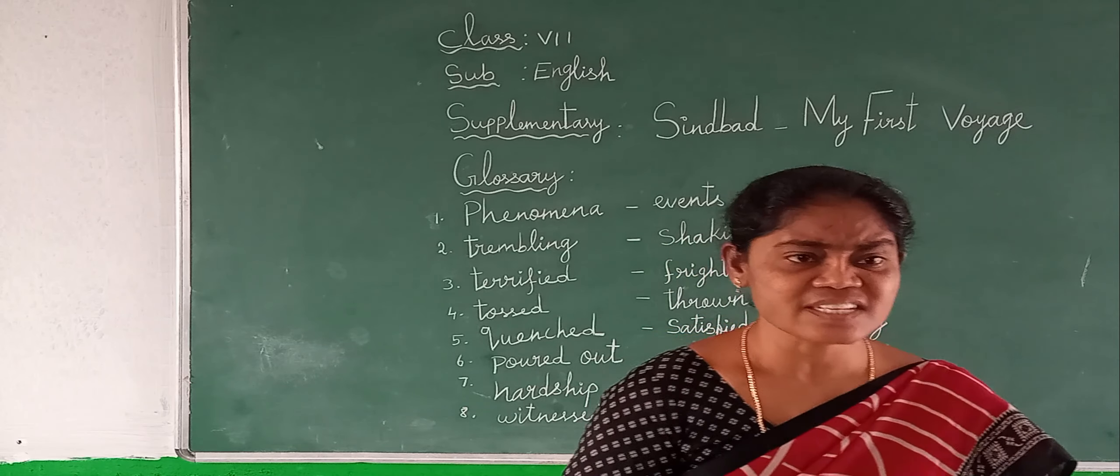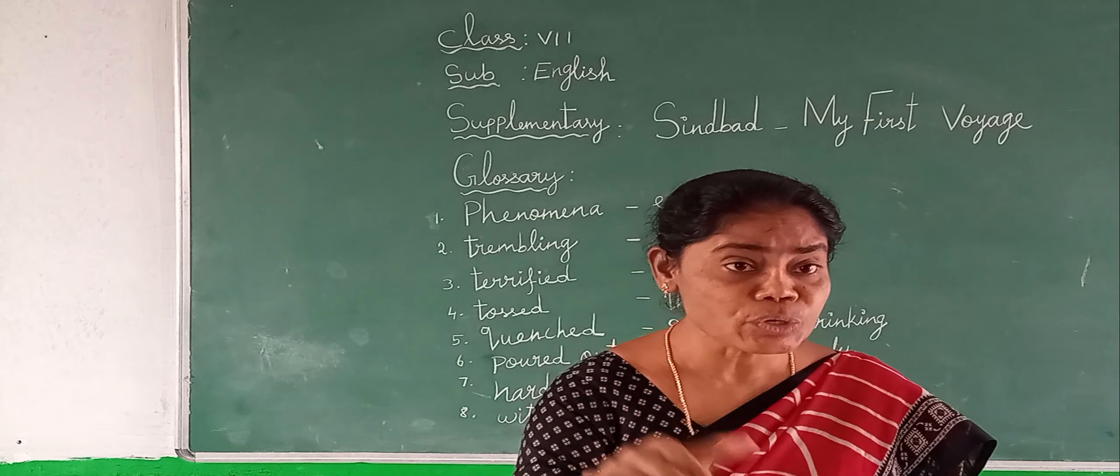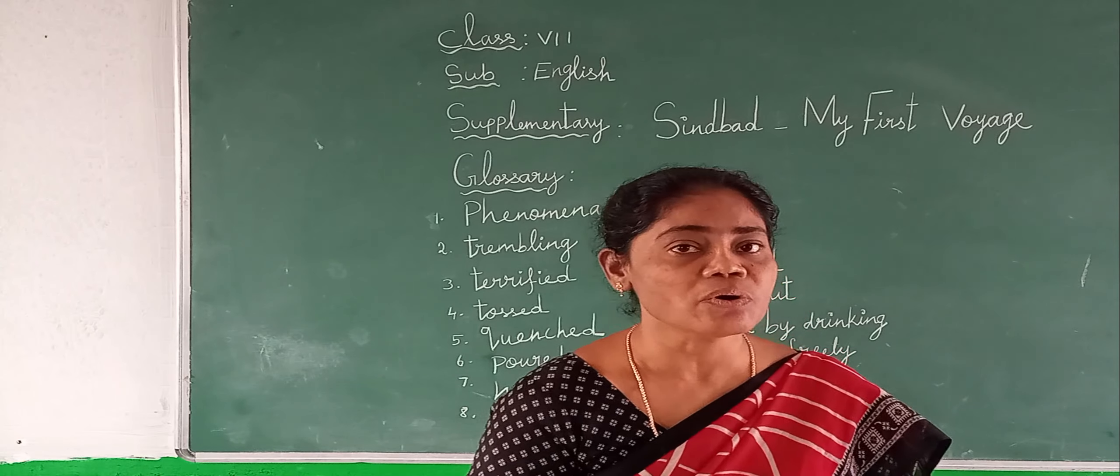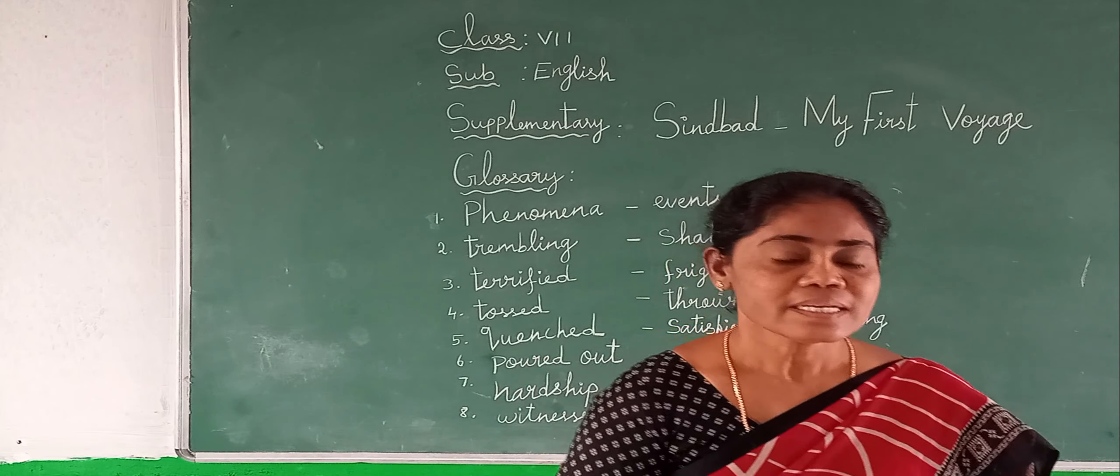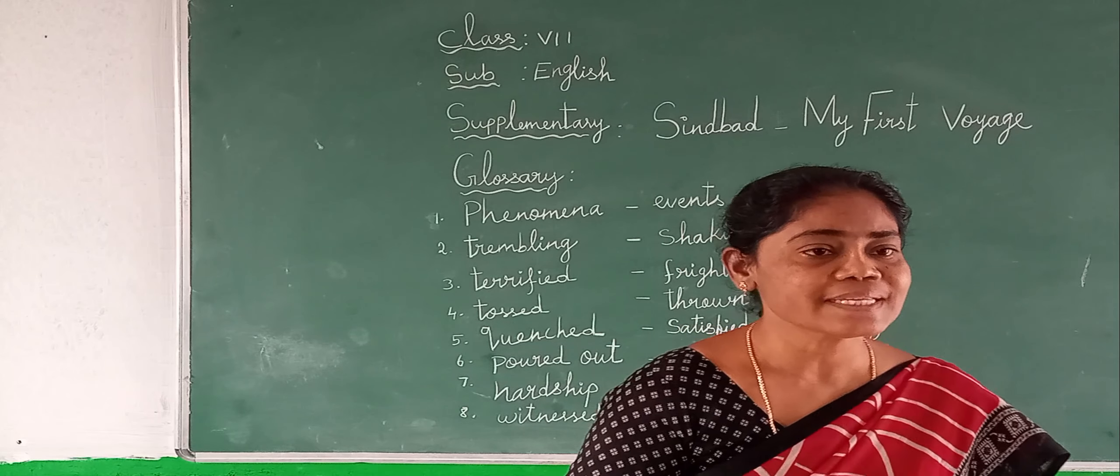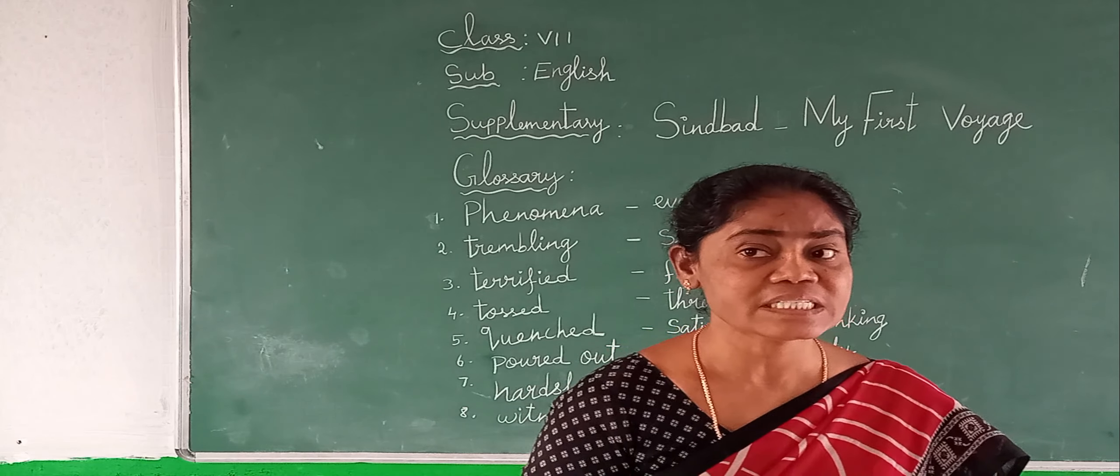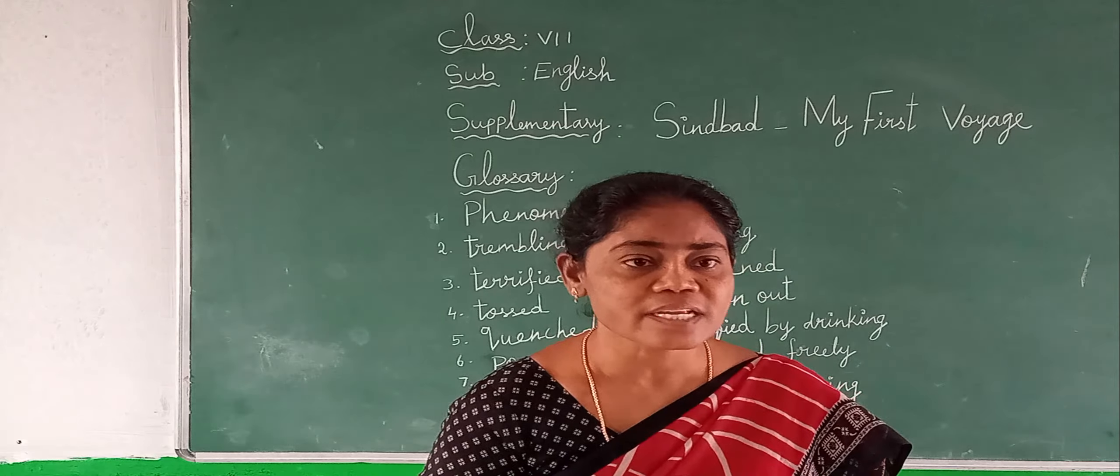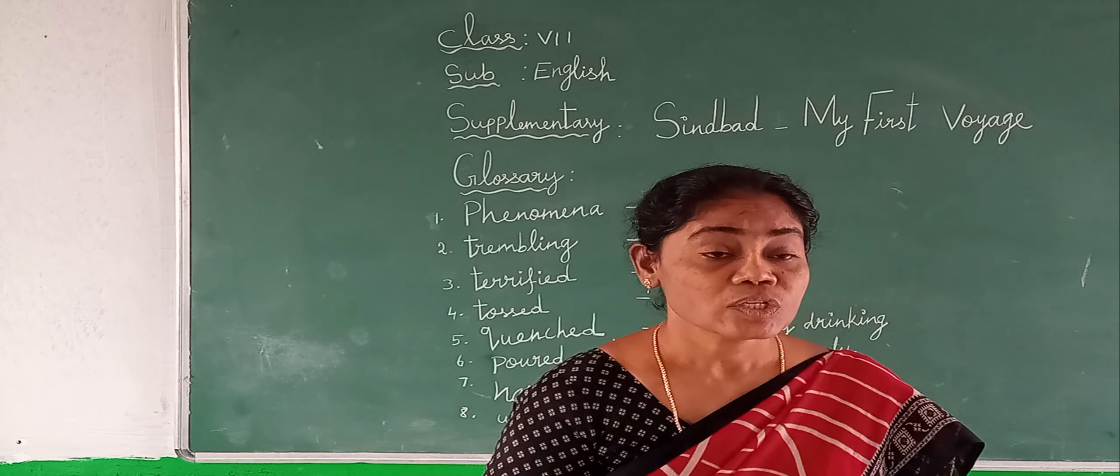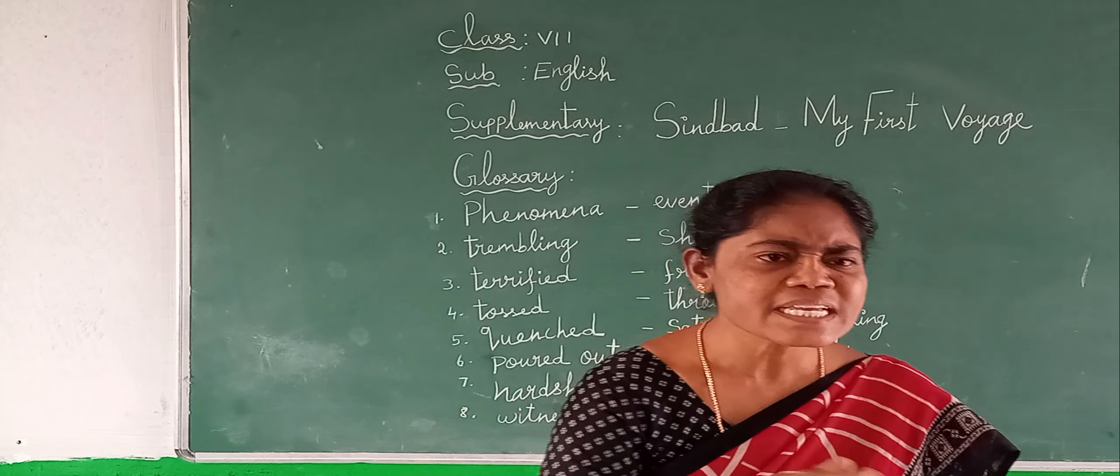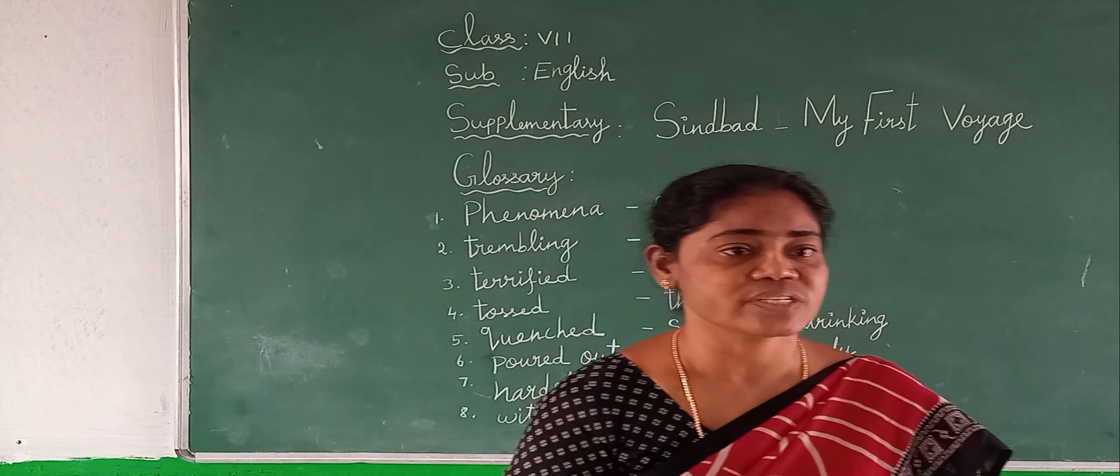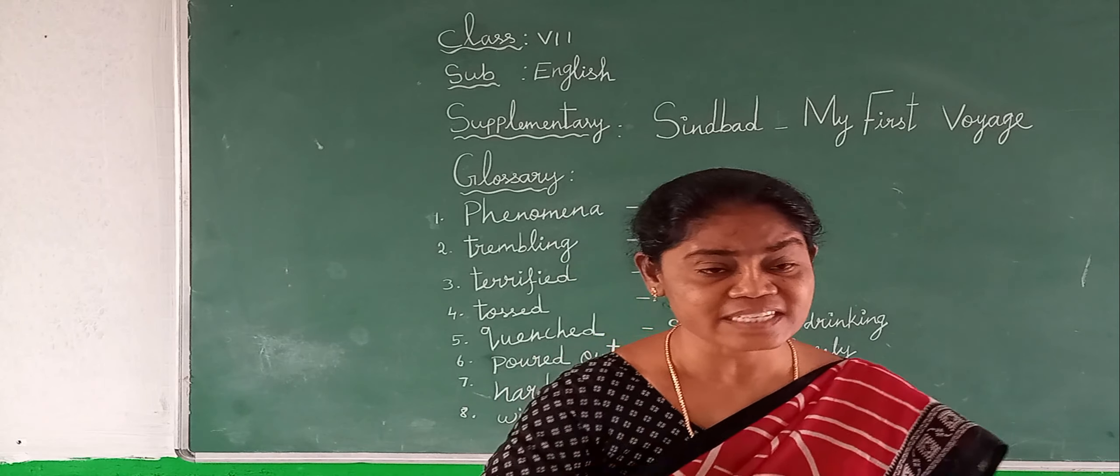Sindbad the sailor is a picture mariner, and the hero of a story cycle of Middle Eastern origin. So he is the hero of this story. This story is described as a man from Baghdad, during the early Abbasid Caliphate, that is eighth and ninth, eighth centuries.